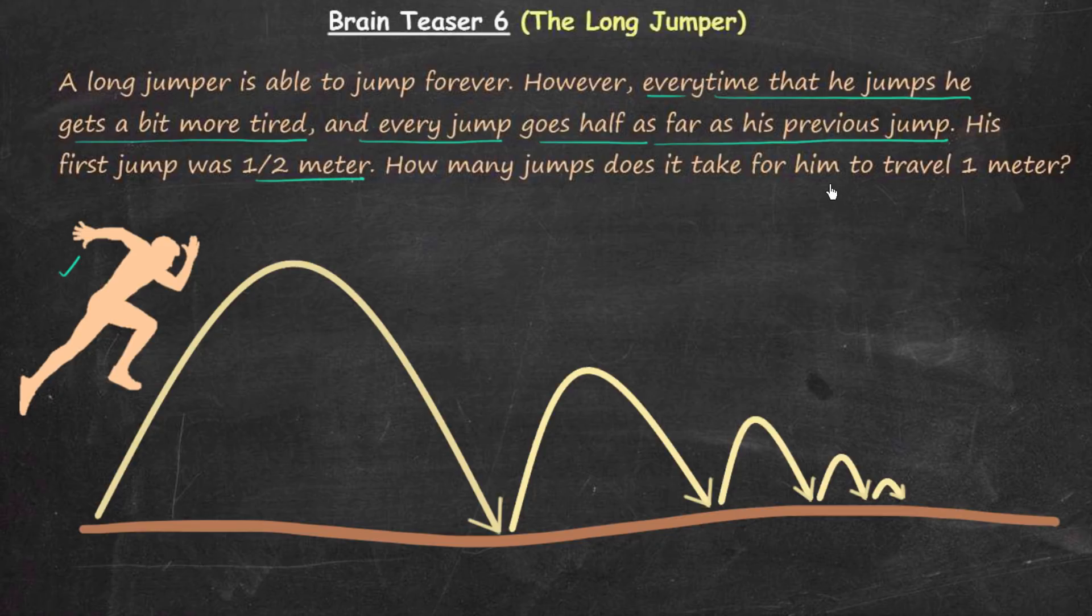The question is very easy to understand. There is a jumper and he can jump forever. The first jump is half a meter long, this means this distance is half a meter long.